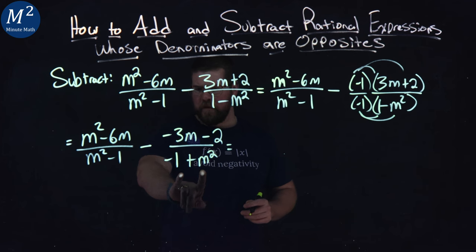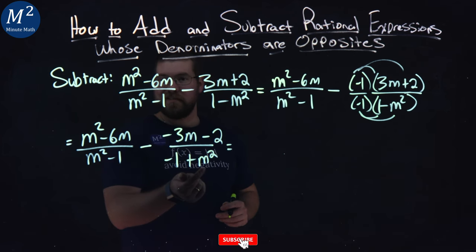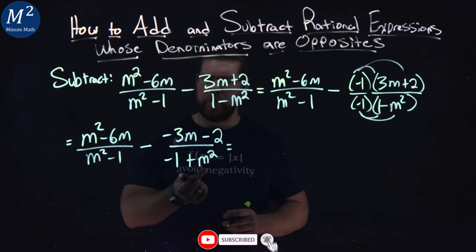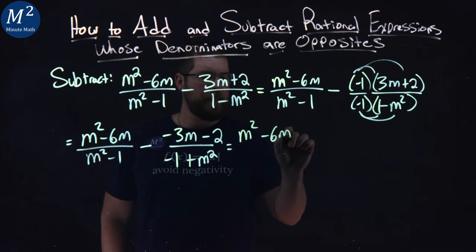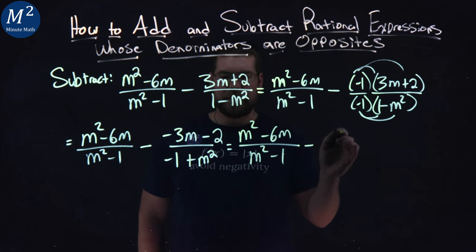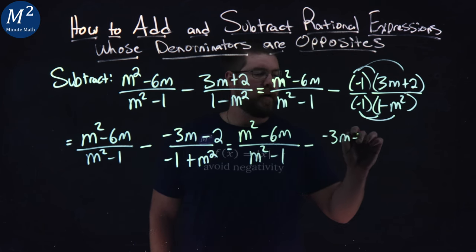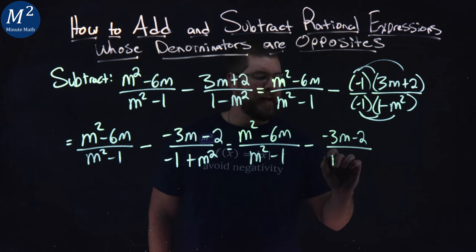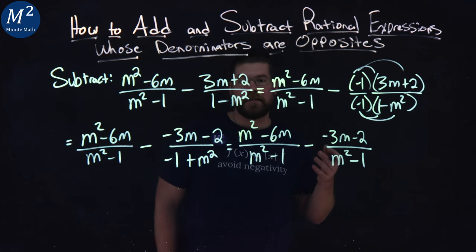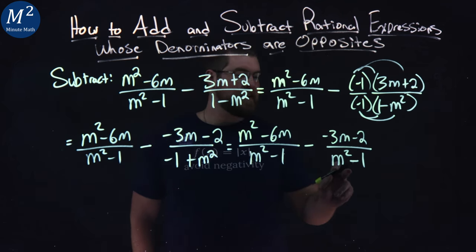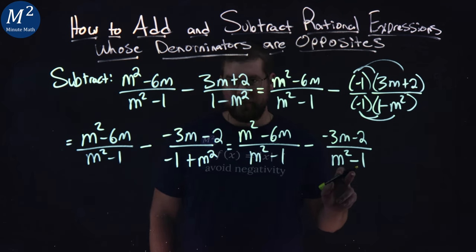Almost the same. Watch this, if we just flip the denominator of the second rational expression part, we'll have the same exact denominator. So we have m squared minus 6m over m squared minus 1 minus here minus 3m minus 2 over m squared minus 1. Now, we're finally somewhere. We see the denominators are the same.